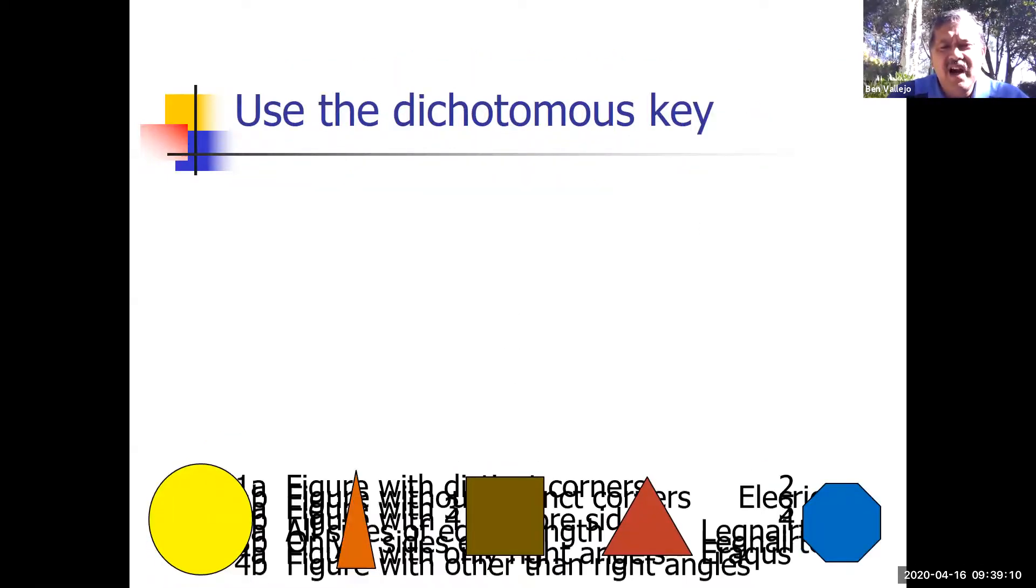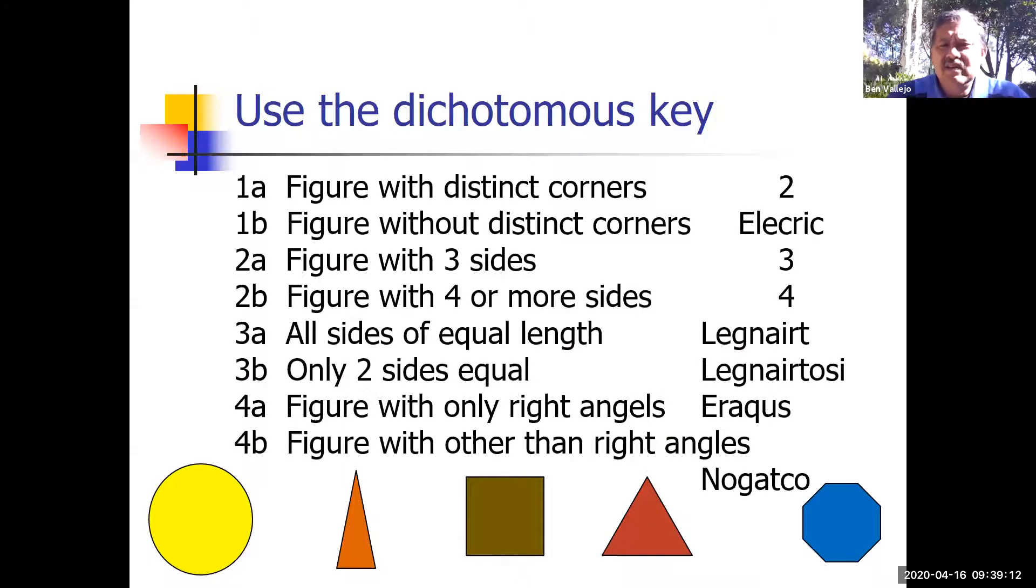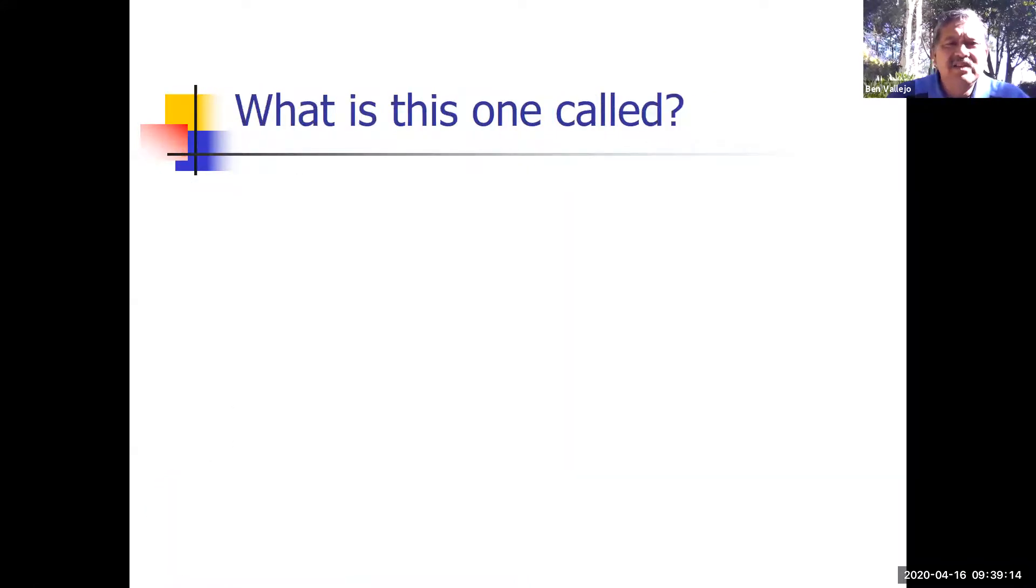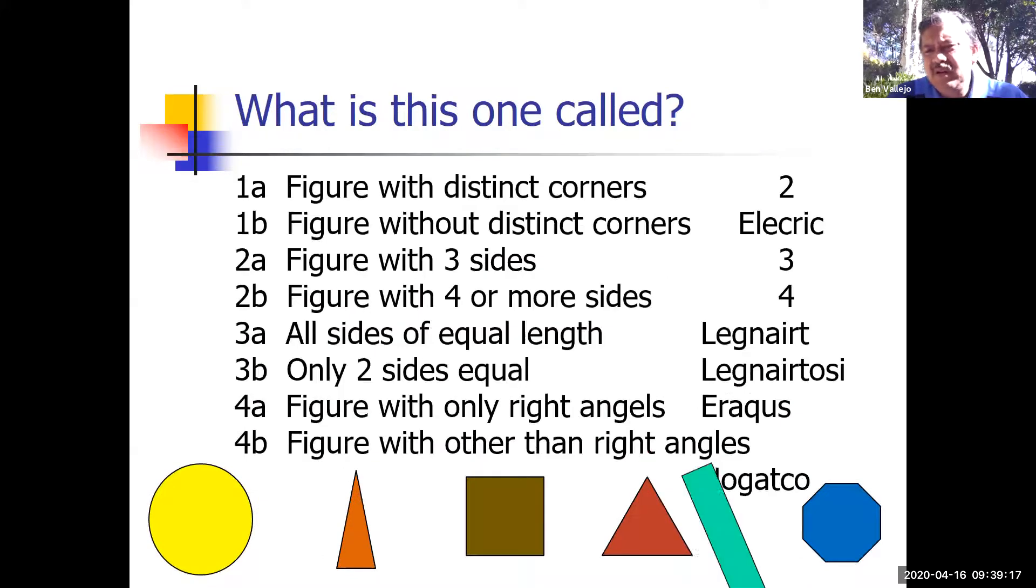Here's the thing: we're going to use our dichotomous key to name these guys. We're going to take a look at the one in the bottom right corner. Well, it looks like a stop sign but it's blue, and we're going to use the dichotomous key.